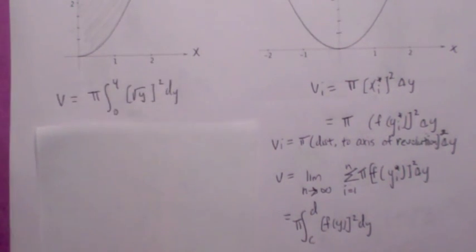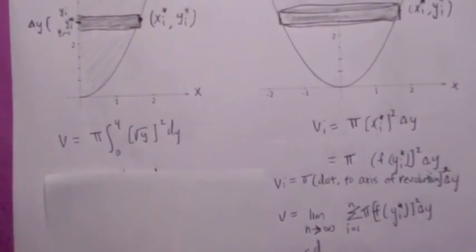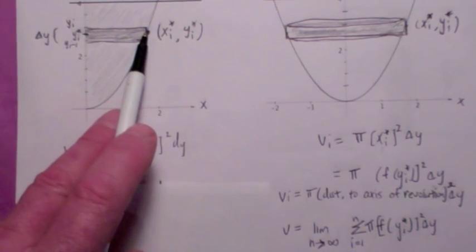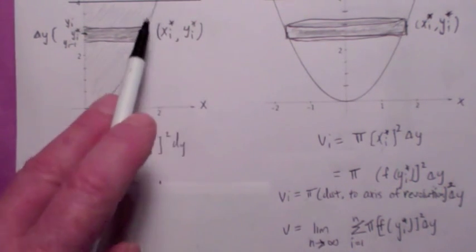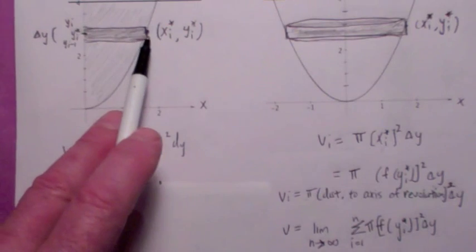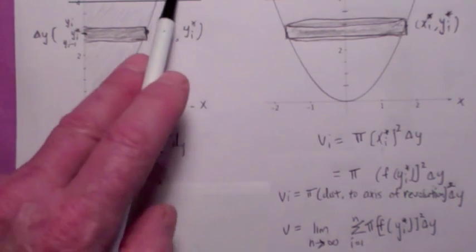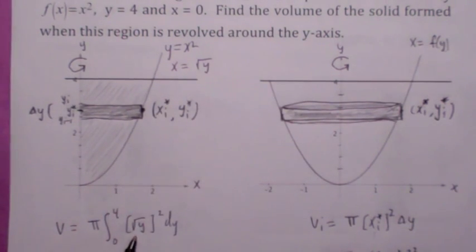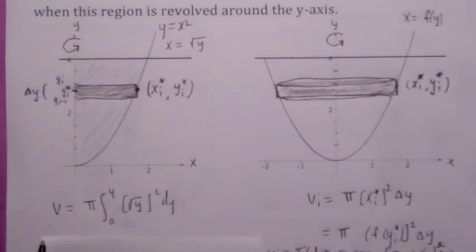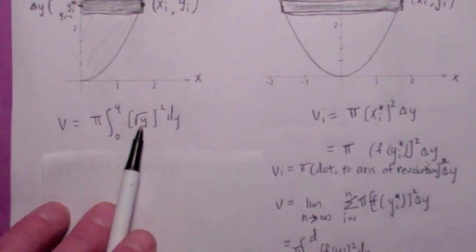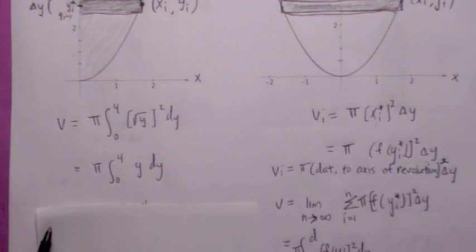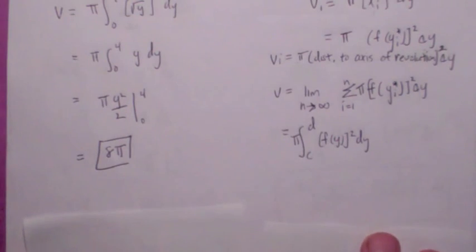So what is it in this problem? The distance to the axis of revolution is going to be x sub i star, and when you solve the function for x, you get x equals square root of y. So instead of x squared, you plug in square root of y since it's a dy integration. The integral becomes pi times the integral from 0 to 4 of y dy, and when you evaluate, you should get 8 pi.